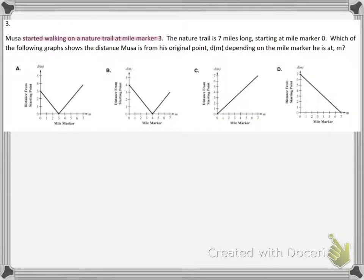Number 3, kind of a simple question when you break it down. Musa started walking on a nature trail at mile marker 3. Right there you actually have your answer handed to you, but let's just finish reading it. The nature trail is 7 miles long, starting at mile marker 0. Which of the following graphs shows the distance Musa is from his original point, D of M, depending on the mile marker he is at M? Well, if you think about it, go ahead and just look at choice A.